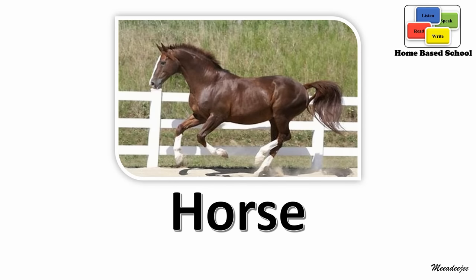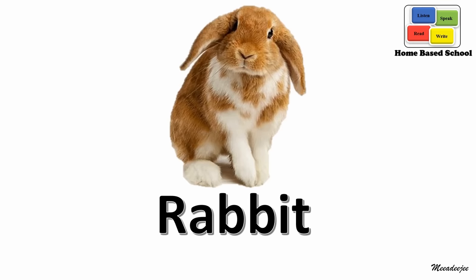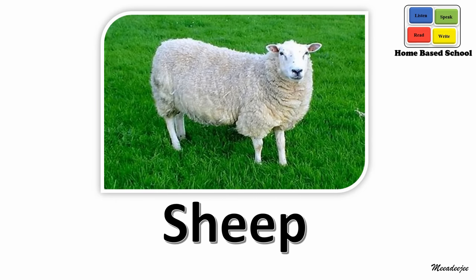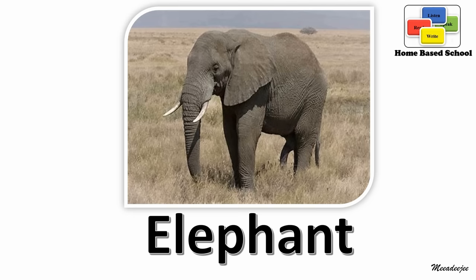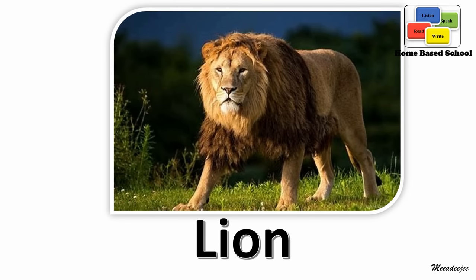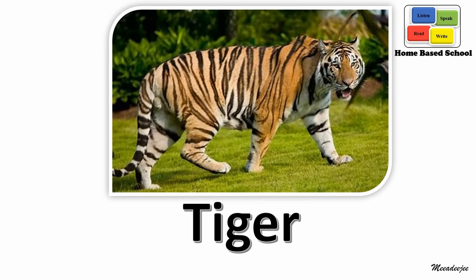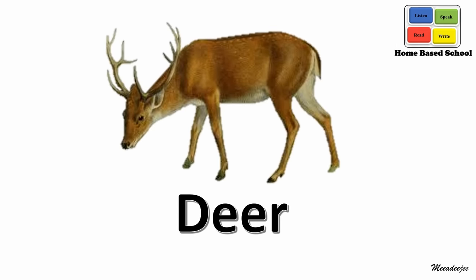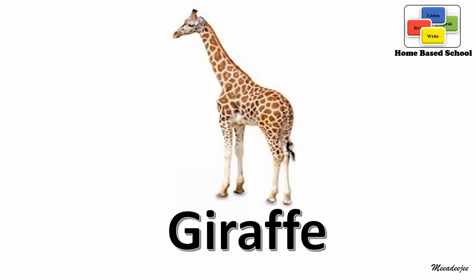Horse, this is a horse. Rabbit, this is a rabbit. Sheep, this is a sheep. Elephant, this is an elephant. Lion, this is a lion. Tiger, this is a tiger. Deer, this is a deer. Giraffe, this is a giraffe.